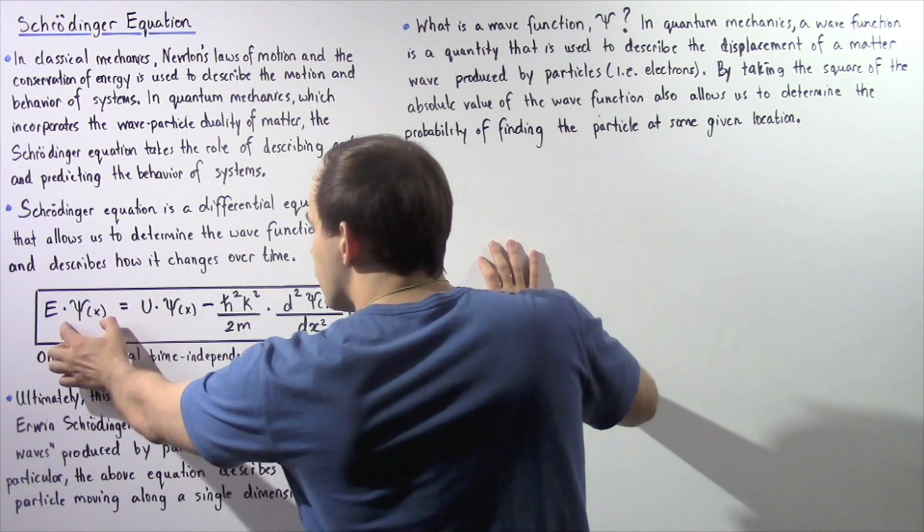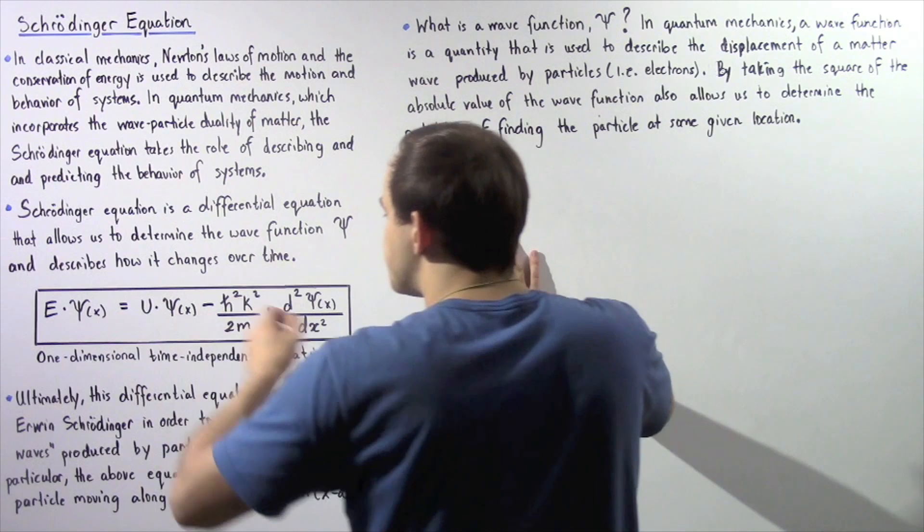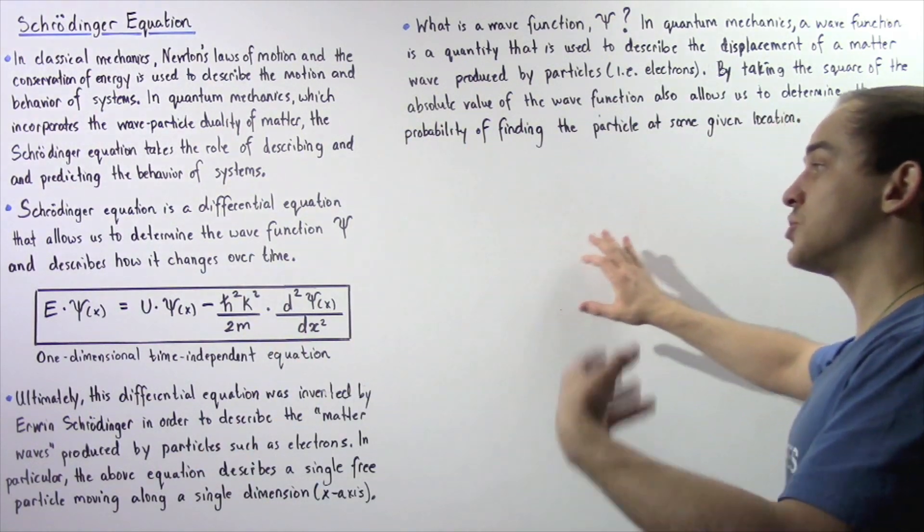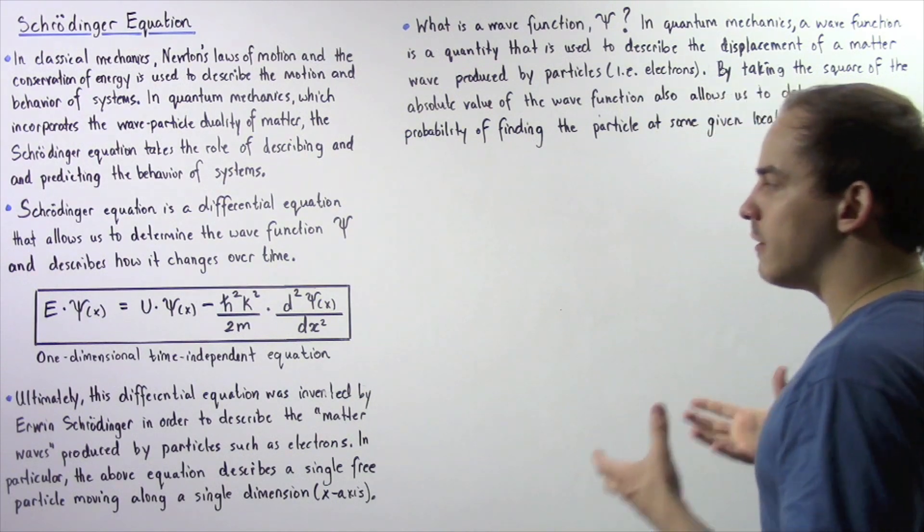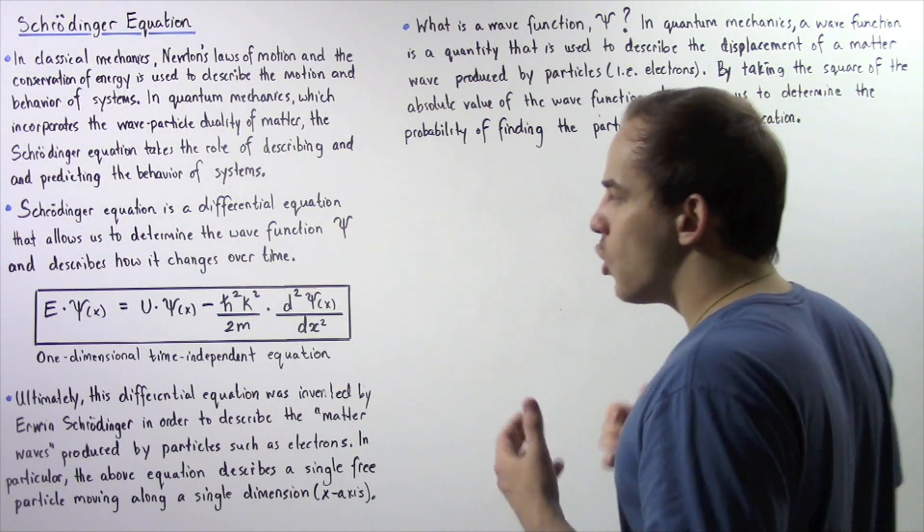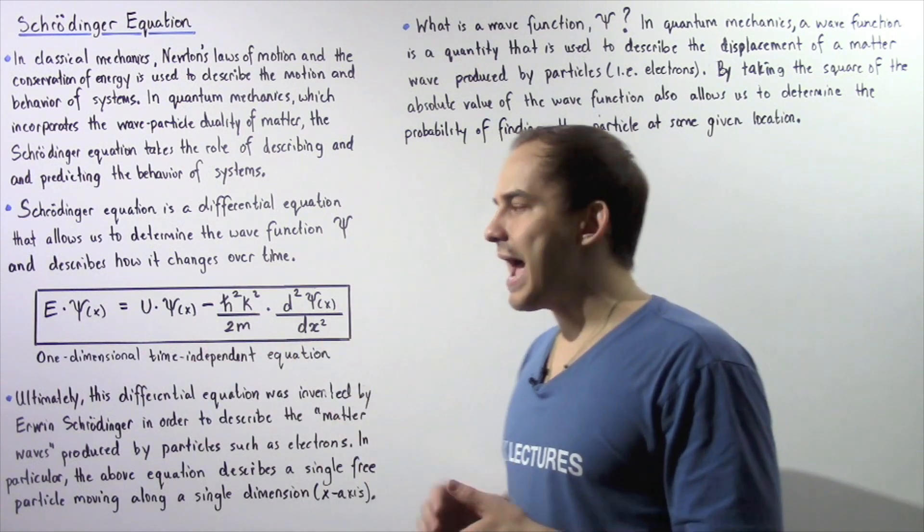And in this equation, the wave function is given by psi with respect to x because the wave function psi depends on x, the spatial position of our object, the electron, along some horizontal one-dimensional axis.